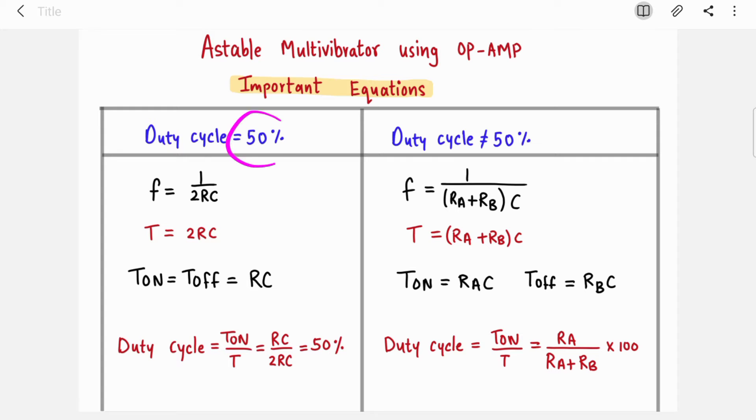In that case, your duty cycle was 50 percent, means T_on was equal to T_off which is nothing but RC. In this case, your T_on and T_off are different. T_on is given as RA into C and T_off is RB into C. That's why your T is (RA + RB) into C.